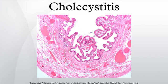Boas' sign refers to increased sensitivity below the right scapula. Subsequent laboratory and imaging tests are used to confirm the diagnosis and exclude other possible causes. Ultrasound is paramount in differential diagnosis. Ultrasound findings suggestive of acute cholecystitis include pericholecystic fluid, gallbladder wall thickening, and Murphy's sign. Visualization of gallstones on ultrasound helps confirm the diagnosis. CT scan, MRI, and hepatobiliary scintigraphy are also useful in the detection of cholecystitis.